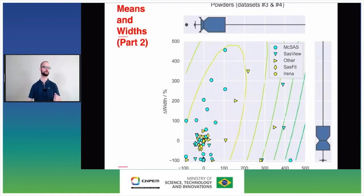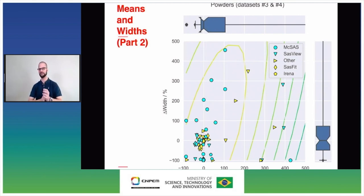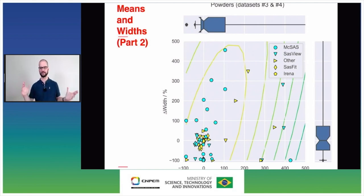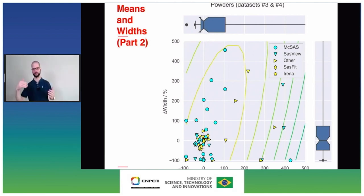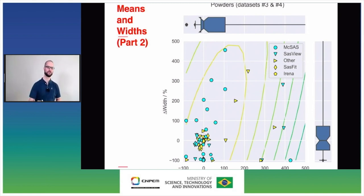For the powder results — the previous analysis covered only the dispersions — things are a little worse. The means could be determined to within a little over 100%, and the widths varied by many hundreds of percent. So obviously we have some work to do to make our powder results comparable.